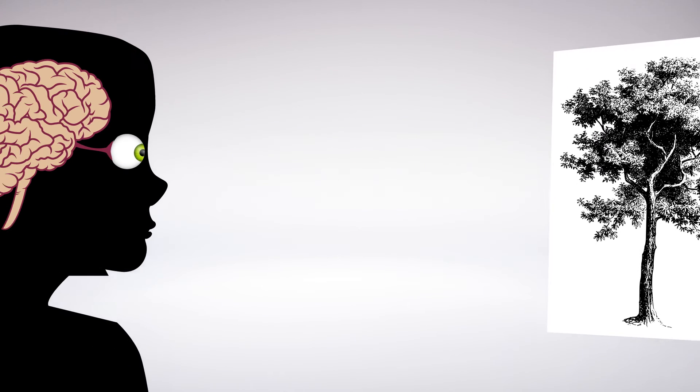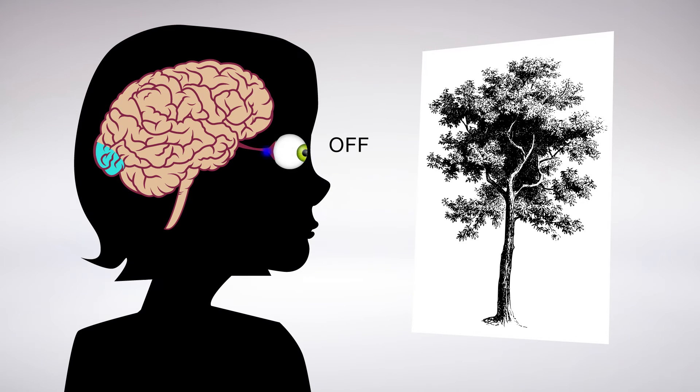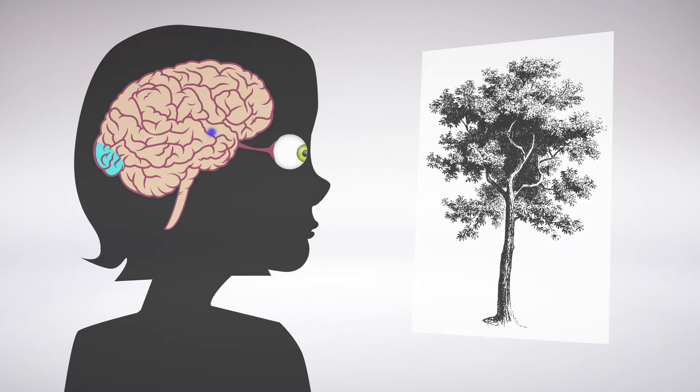The results suggest a visual system that uses off responses to convey information about location and on responses to detect the orientation of borders. It makes sense that the off responses would be used to map location because off retinal cells have properties that allow them to carry more fine-scale spatial information than on cells.